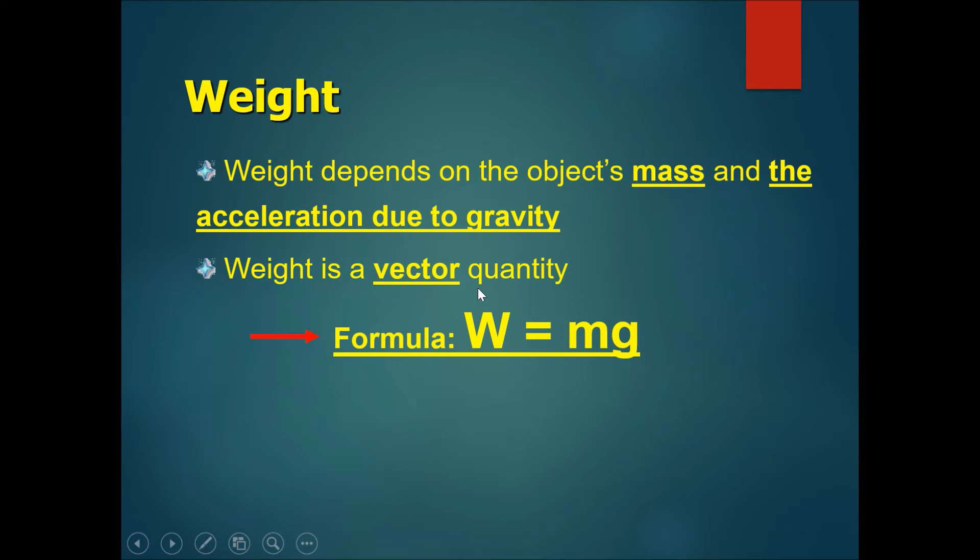We can summarize the formula for weight as W (weight) equals mass times acceleration due to gravity g. W equals mg.